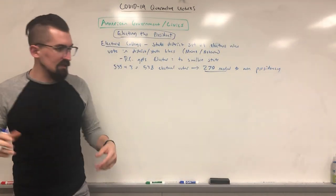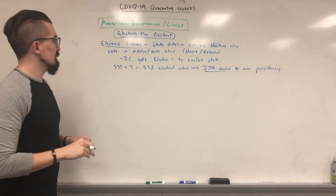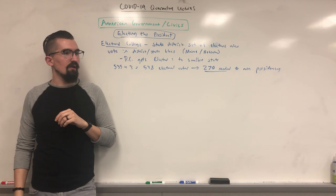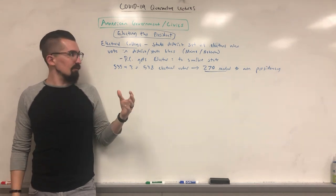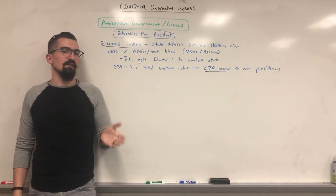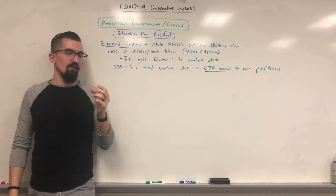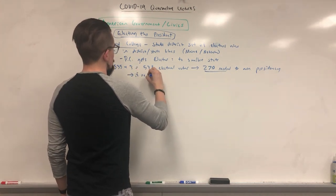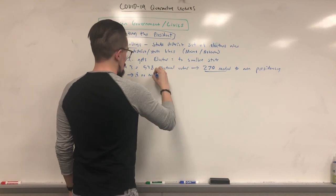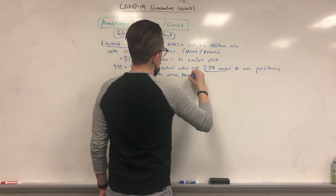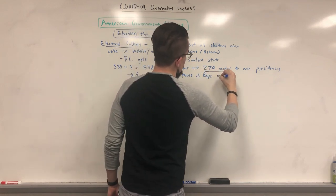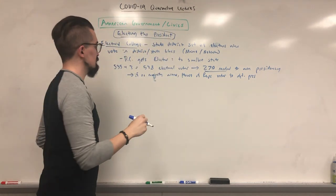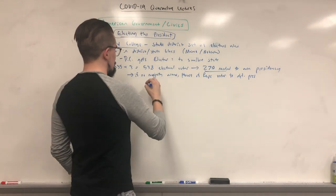In the odd case where there is no majority winner — this happened a couple of times in history — when nobody got 270 and there were multiple candidates splitting the electoral votes, the vote goes to the House of Representatives. If there is no majority winner, the House votes to determine the president, because they are closer to the people than the Senate.